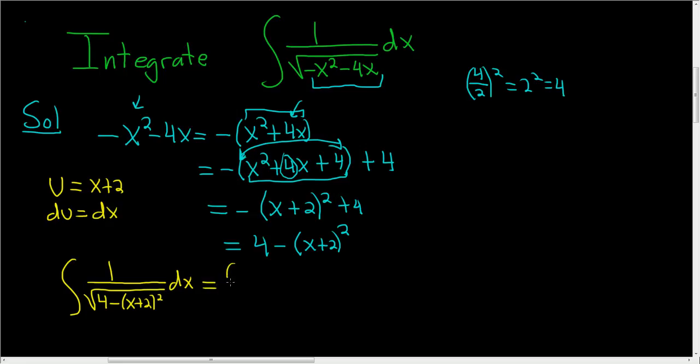So this is equal to 1 over the square root. And I'm going to write 4 as 2 squared so it matches the formula that gives us our arcsine. You might say well what's the formula that gives us arcsine? Well it's this one. So this is the formula that we're going to use in this problem.